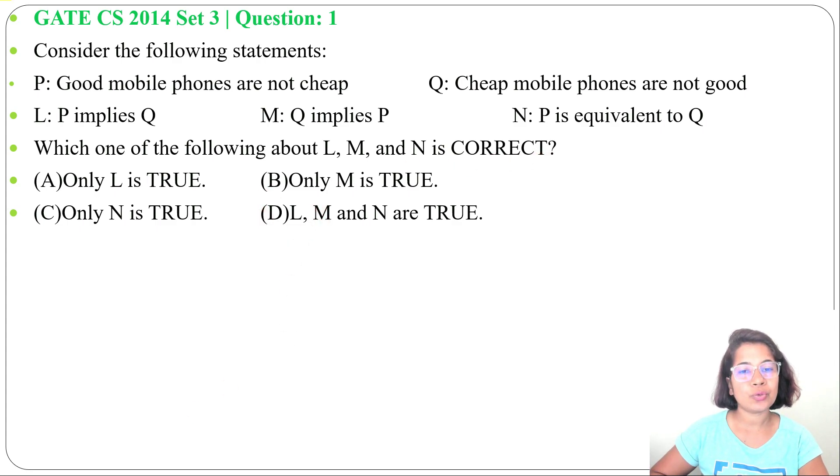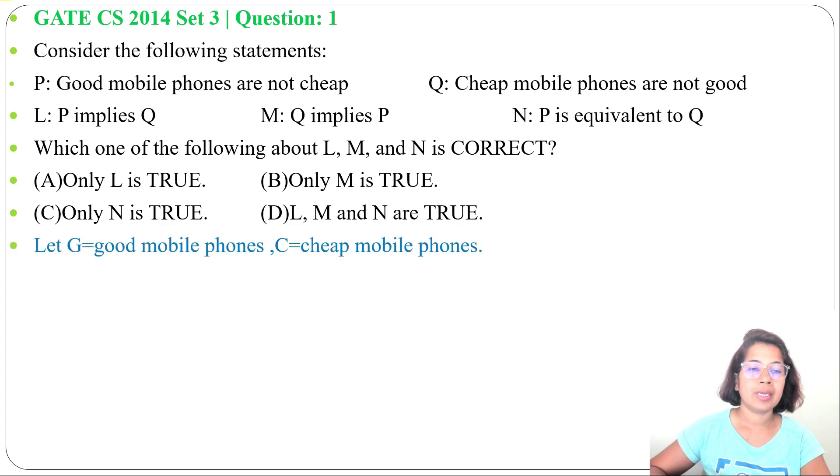Let me consider two propositional variables: G for good mobile phone and C for cheap mobile phone. Now, P we can write as good mobile phones are not cheap, so G implies negation of C. The mobile which is good is not cheap.